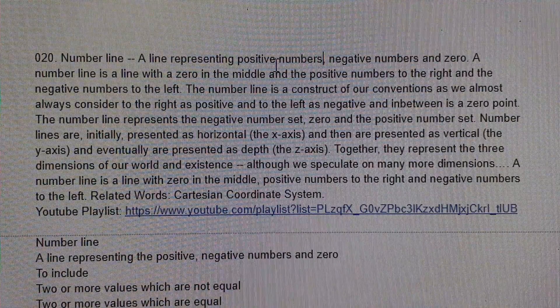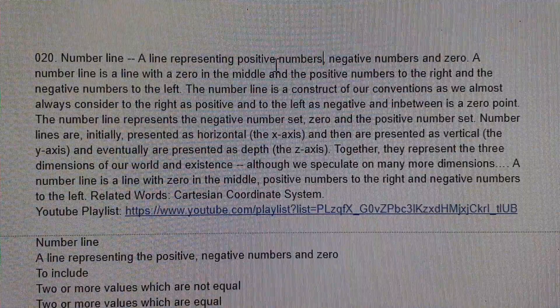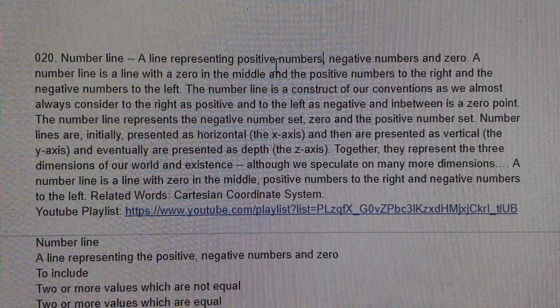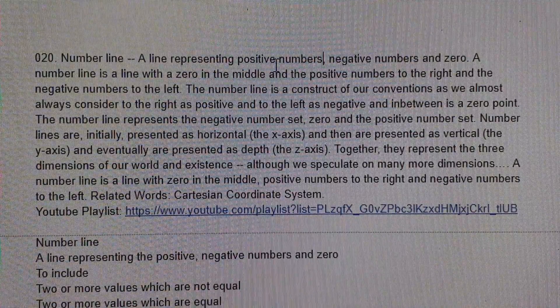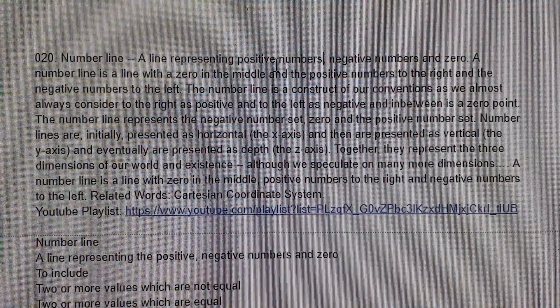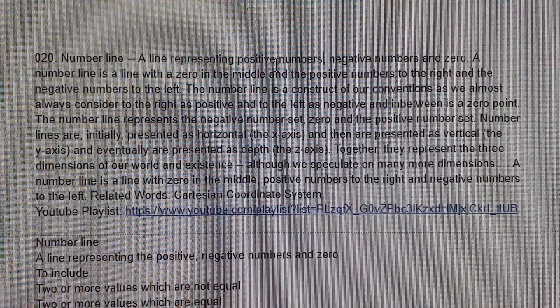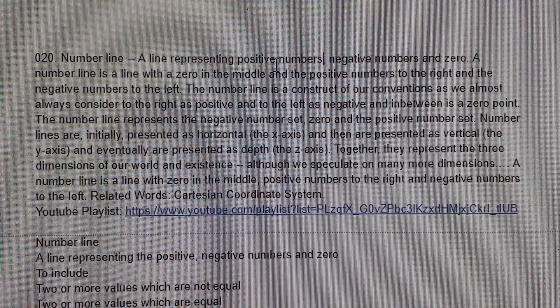Number lines are initially presented as horizontal (the x-axis), and then are presented as vertical (the y-axis), and eventually are presented as depth (the z-axis).